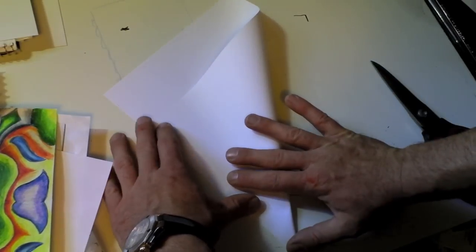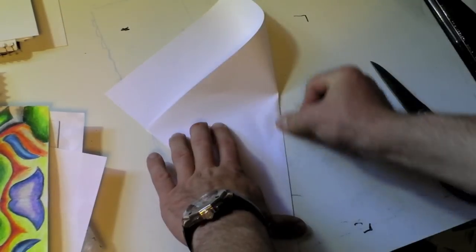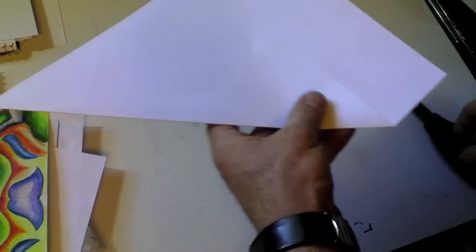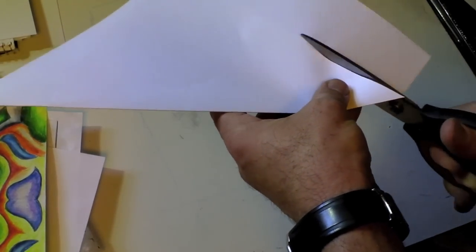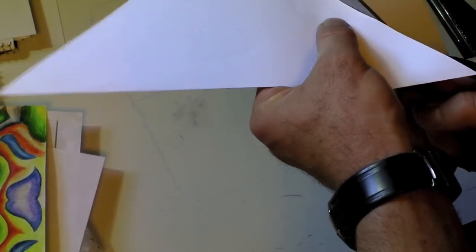So first you need a square piece of paper. It's really easy to create one by folding the edge of an 8.5x11 paper so it meets the other edge so you have a 45 degree angle. Cut off the extra and voila,